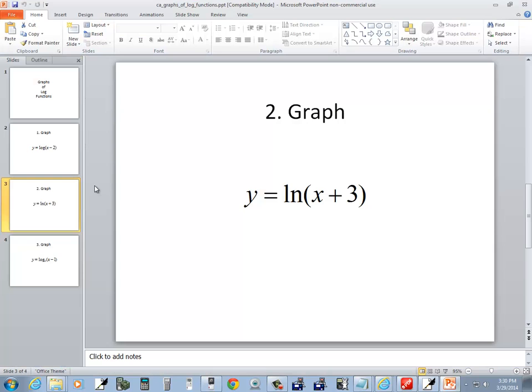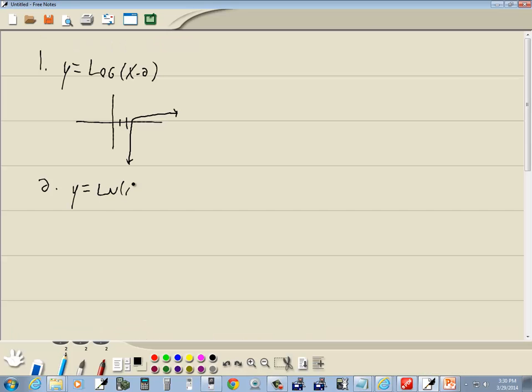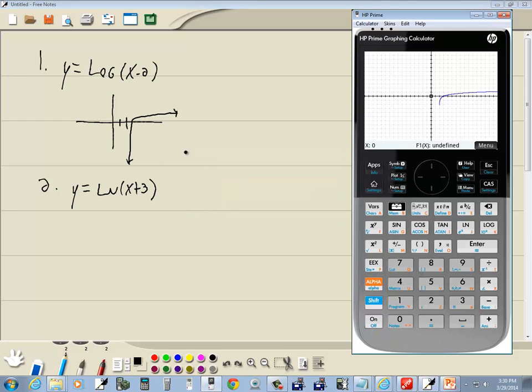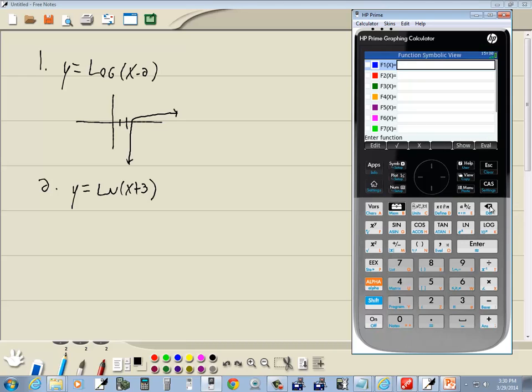We've got y is equal to natural log of x plus 3. If I go back to my symbol, press my backspace, clean that out. Then we'll do natural log. That's the LN button. This one right here. We'll push that. It puts the beginning parentheses, closing parentheses. I just had to put in my x plus 3. Press enter.